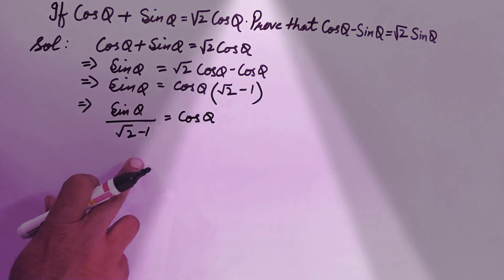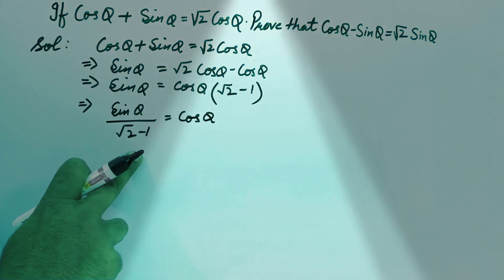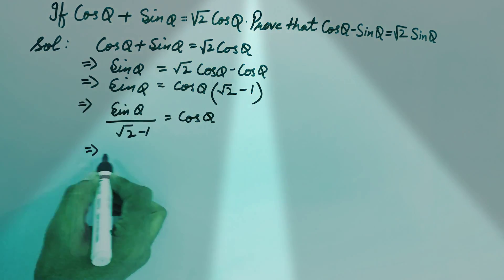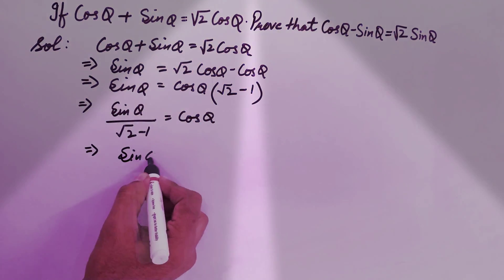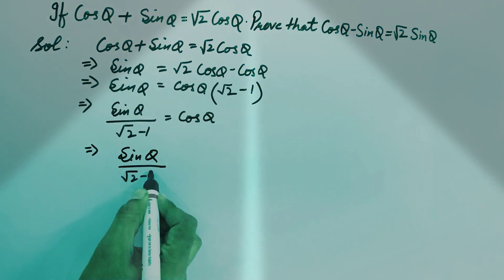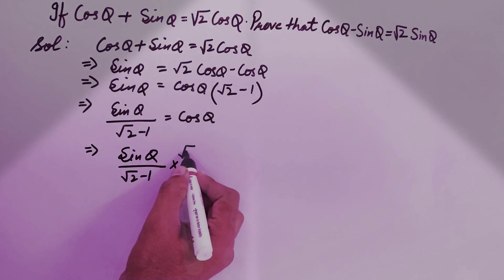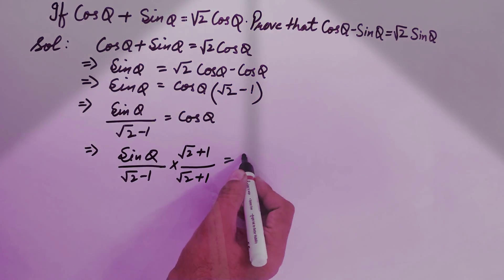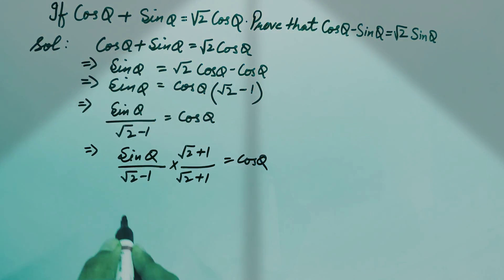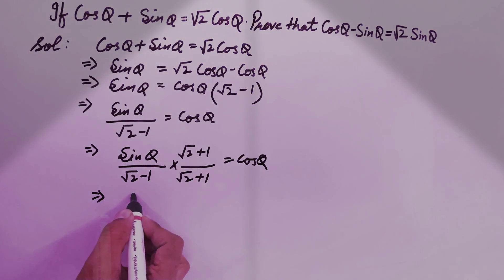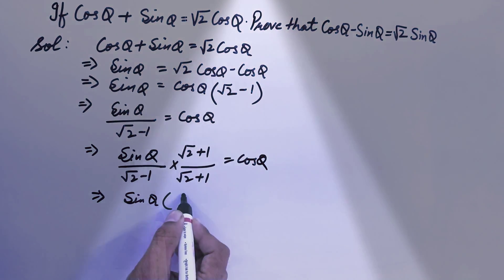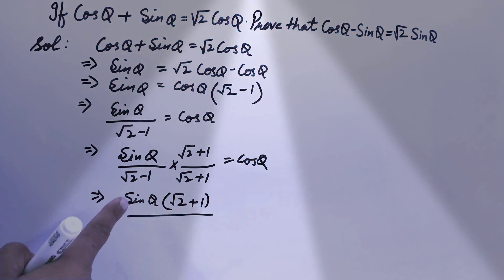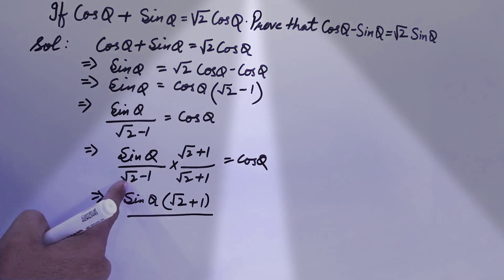On the left-hand side, we rationalize the denominator by multiplying both numerator and denominator by (√2 + 1). This gives us sin θ × (√2 + 1) in the numerator.